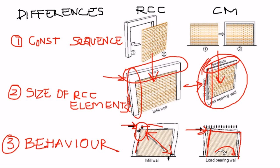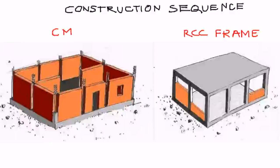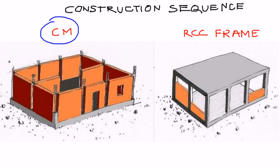It is important to discuss the difference between confined masonry construction and reinforced concrete frame construction because these two construction technologies are similar and completed buildings look very similar at the end. However, the actual sequence of construction is different.